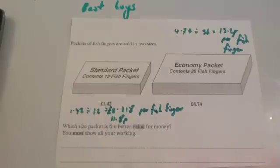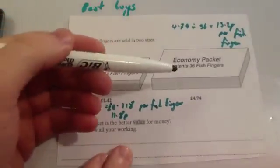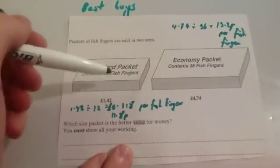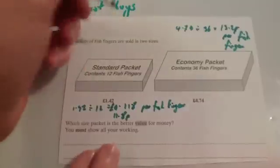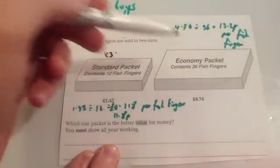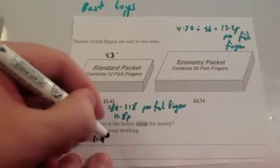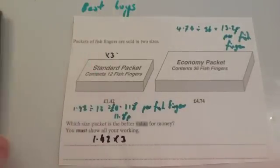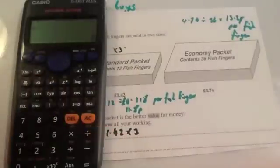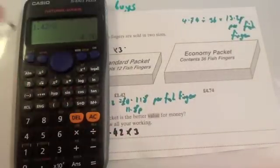The alternative way to do it: you've got 36 fish fingers here. If you were to buy three of these packets, three twelves is 36, you would get the same amount of fish fingers. If you simply times the £1.42 by three, you can find out the cost of 36 fish fingers using this option. So £1.42 times by three equals £4.26.